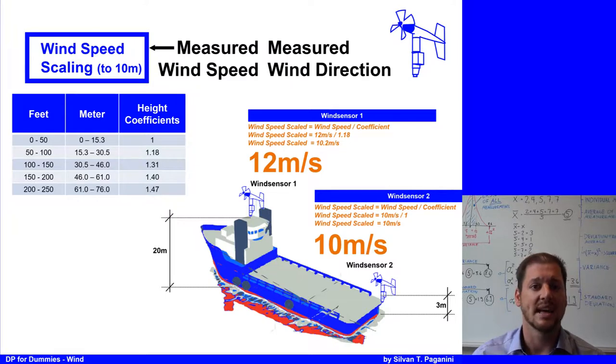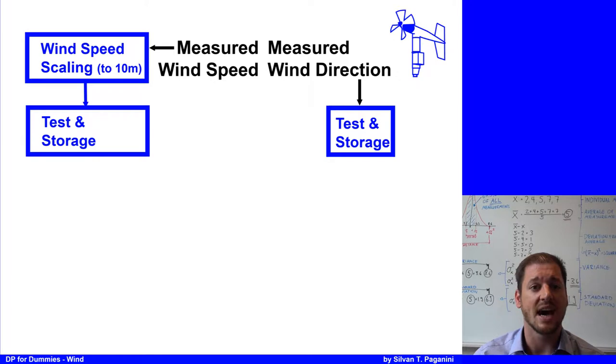This data is then tested if it's in the expected range and if the data is being updated, meaning not frozen. The data is being stored because if the operator switches off all wind sensors, the last used measurements will be used in the DP system until the operator selects the wind sensor again or changes the value manually.